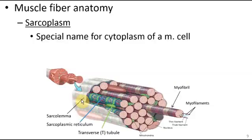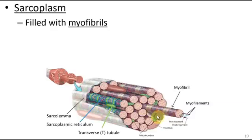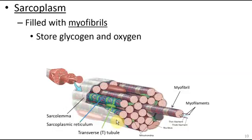The sarcoplasm is another name for the cytoplasm — the liquid portion of the cell. Inside the sarcoplasm we have myofibrils, which are these individual fibers here that make up the cell. They store glycogen and oxygen, because the muscle needs glycogen as an energy source and oxygen for normal metabolism.